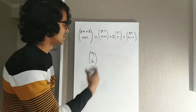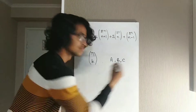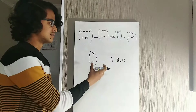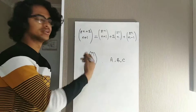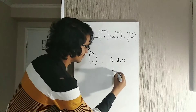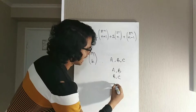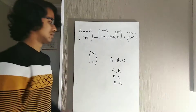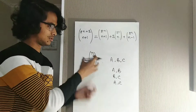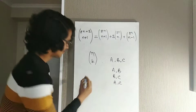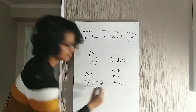Let me give you an example. Let's say we have three different alphabets: A, B, and C. There are three alphabets, and how many different ways can we choose two alphabets out of those three? Well, we can choose A and B, or B and C, or A and C. So there are only three different ways. That means 3 choose 2 equals 3.